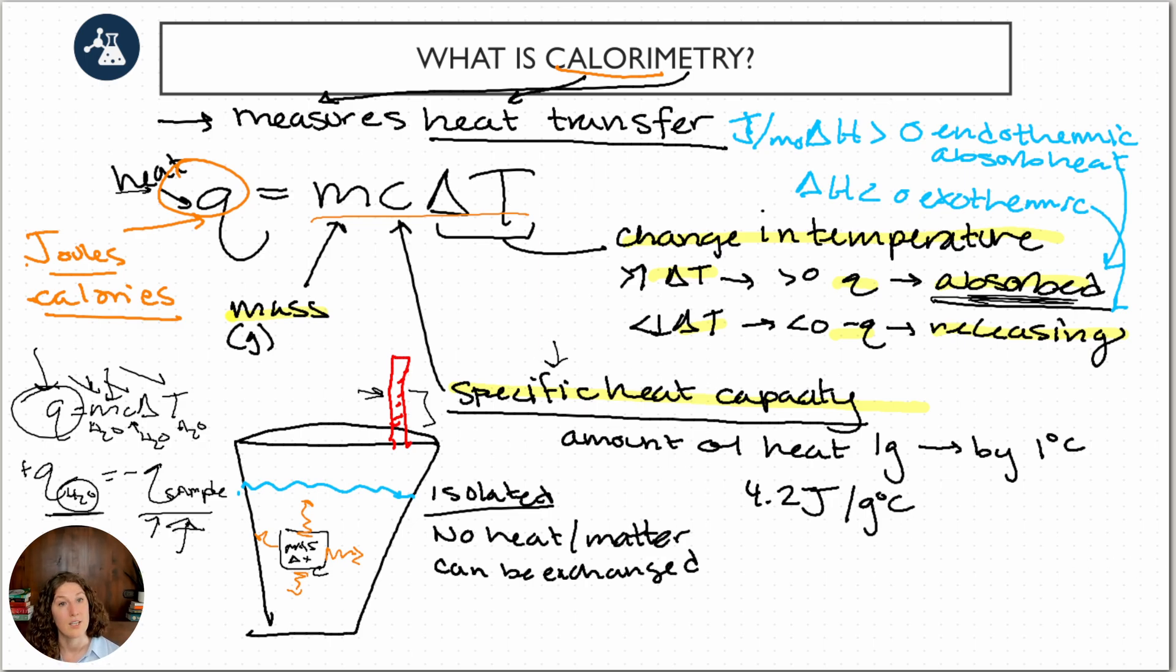Now there's one more term that we often can use with calorimetry and that's just called heat capacity. Heat capacity just is the energy required to increase anything one degree Celsius. So we just take mass out of it and it's just equal to heat over change in temperature. So sometimes we'll refer to heat capacity, which means that we don't care about mass, whereas if we're talking specific heat capacity, we care about that specific amount of heating up one gram of the substance by one degree Celsius.